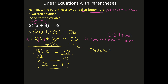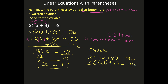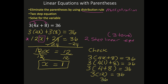You should always check your answer if you have time. I have 3 times (4x plus 8) equals 36. When I solved my problem, x turned out to be 1, so wherever I see x, I replace it with 1 and use order of operations. Inside the parentheses I have multiplication and addition, so I multiply first: 4 times 1 is 4, then add 8. Still in the parentheses, 4 plus 8 is 12. Then 3 times 12 gives me 36 on the left, which equals 36 on the right. So x equals 1 is correct.